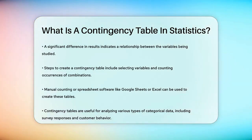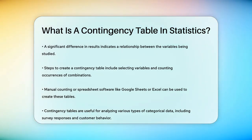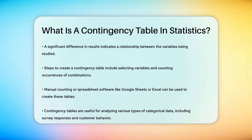In summary, a contingency table is a powerful tool in statistics that helps you visualize and analyze the relationships between categorical variables. By organizing data into a clear and structured format, you can easily see how different categories overlap and use statistical tests to determine if these relationships are significant. Whether you're analyzing survey data, customer behavior, or any other type of categorical data, contingency tables are an essential tool to have in your statistical toolkit.